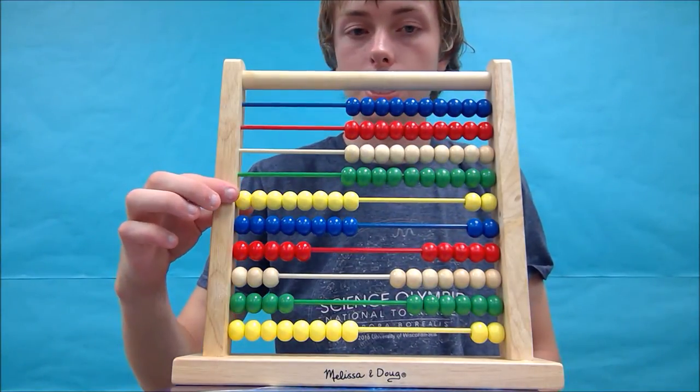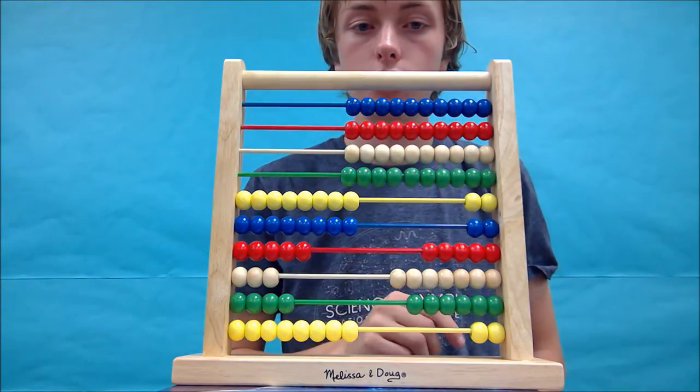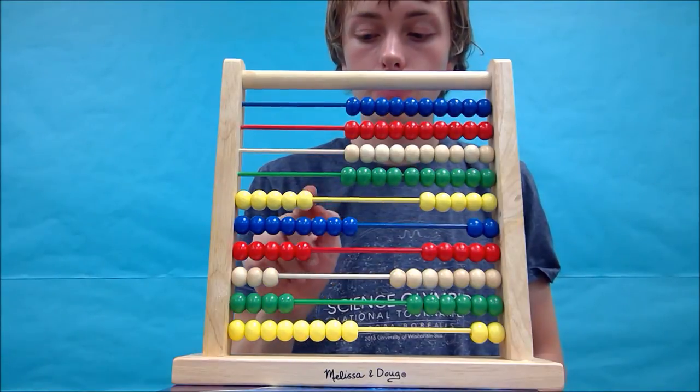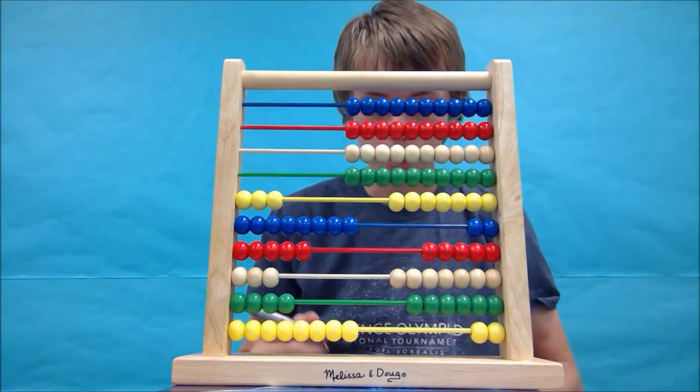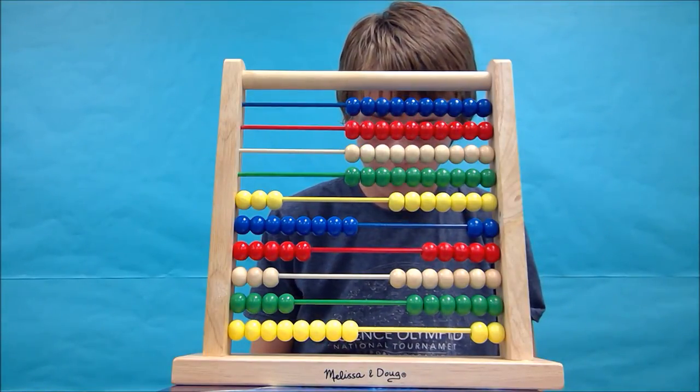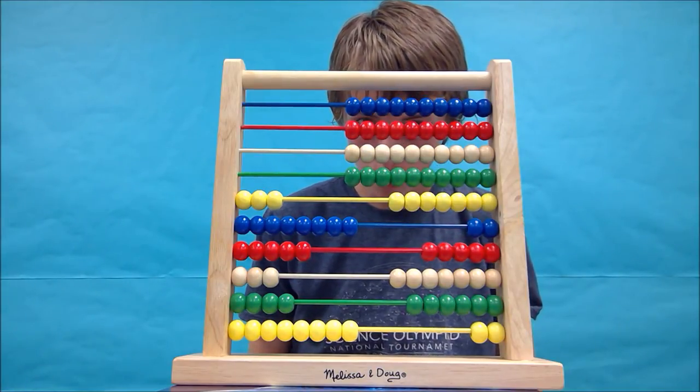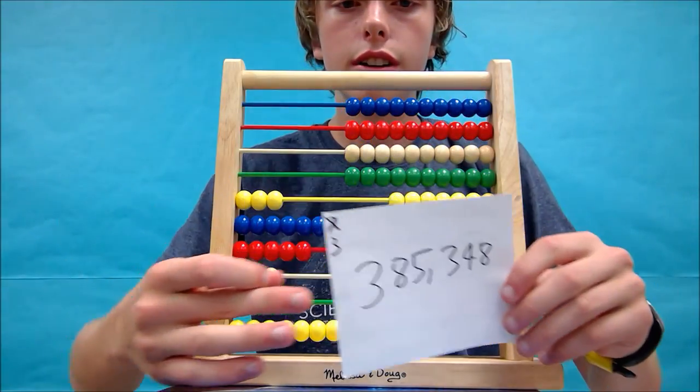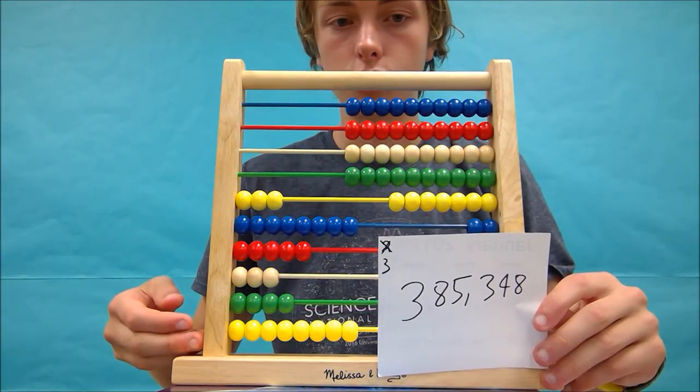Lastly, we need to subtract the 100,000 beads, the yellow beads. We need to subtract 5 of them. 1, 2, 3, 4, 5. Alright, now we can write down the number we have. I'm going to write it down. 3, 8, 5, 3, 4, 8. To give us an answer of 385,348. Your abacus should look like this once you're completed.